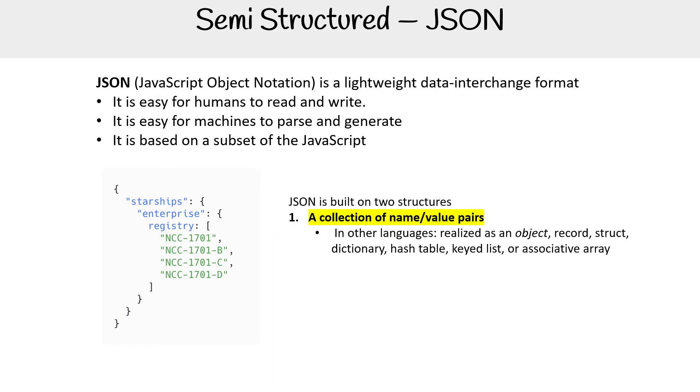If you've ever heard of those things before, that's basically what it looks like. The other part is an ordered list of values. Other languages might call them arrays, vectors, list or sequence.